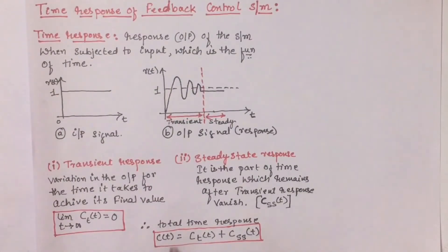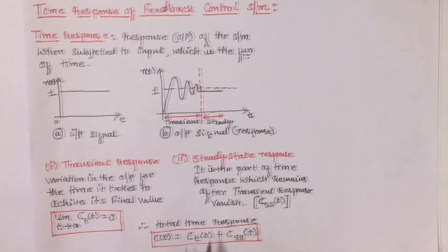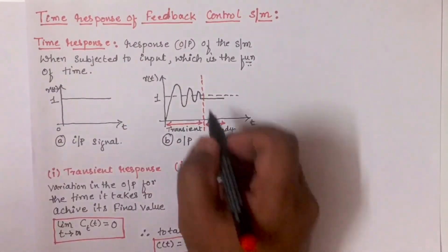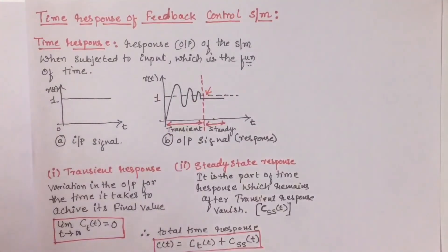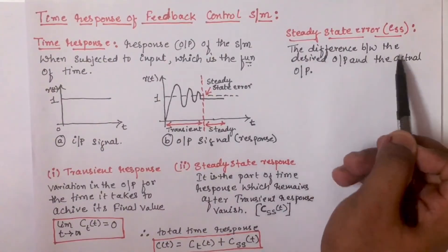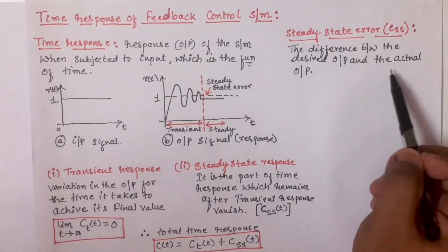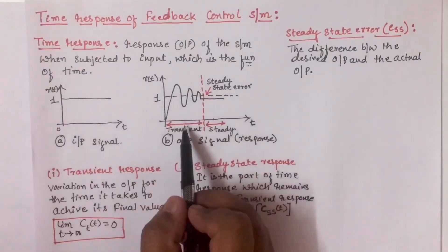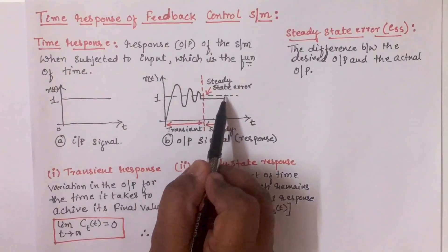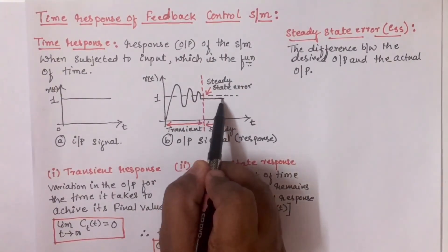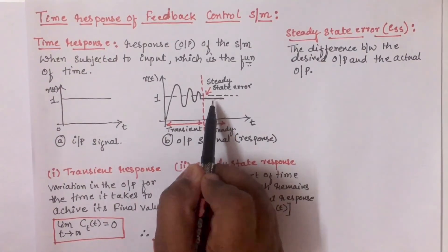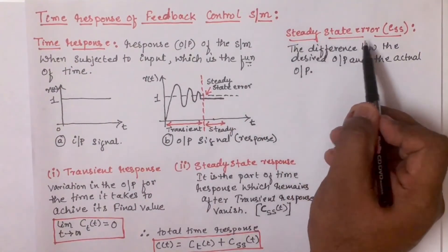Therefore, the total time response C(t) can be given as C_T(t) plus C_SS(t). This is the overall time response of any given system. With respect to time response, we can define one more term which is known as steady state error. We can define steady state error as the difference between the desired output and the actual output. For example, in the output signal, if the dotted line specifies the desired output and this is the actual output we are getting, the difference between the desired output and the actual output is known as steady state error.